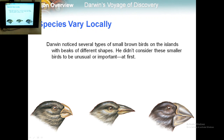Another example of species varying locally is small brown birds on islands with beaks of different shapes. Darwin didn't consider these small birds to be unusual or important at first, but he eventually found that these birds all belonged to the same species group.